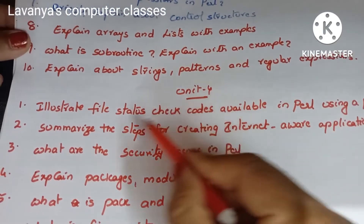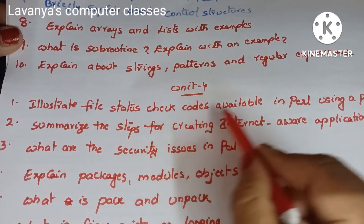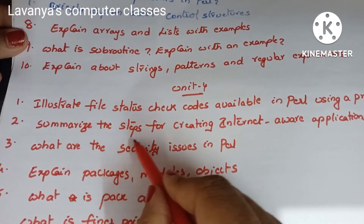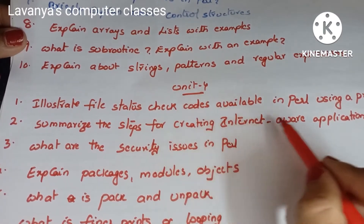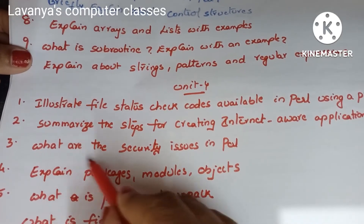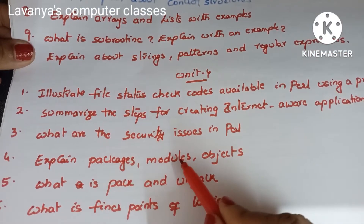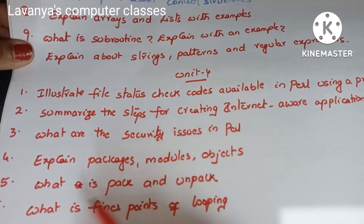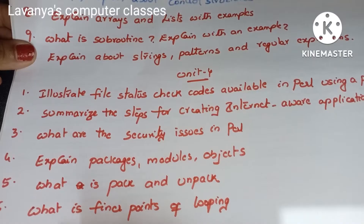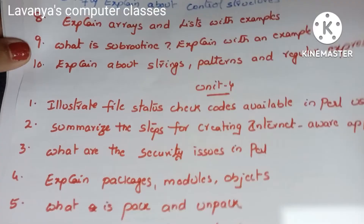Unit 4 important questions: illustrate file status check codes available in Perl using a program. Summarize the steps for creating internet-aware applications in Perl — this is advanced Perl. What are the security issues in Perl? Explain packages, modules and objects. What is pack and unpack? Explain pack and unpack. And what are the finer points of looping? These are the questions from unit 4.